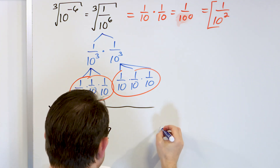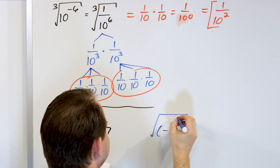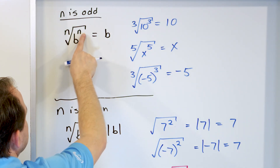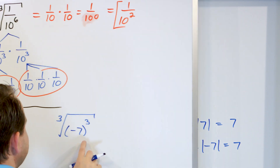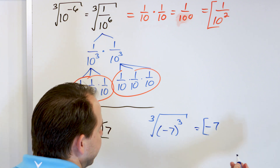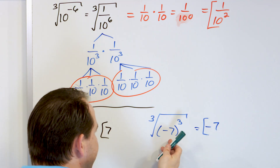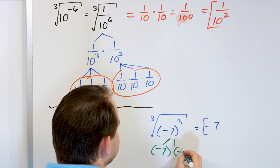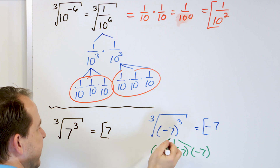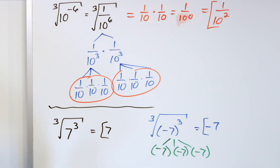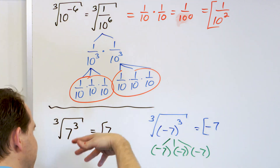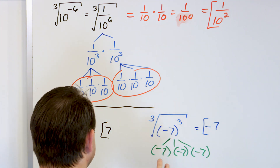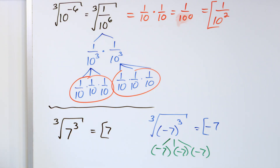Similarly, if we have the cube root of negative 7 cubed, it's the same situation — cube root canceling with a cube power — and whatever is inside comes out, so the answer is negative 7. You can also verify this with a factor tree: negative 7 times negative 7 times negative 7 is a triplet, and it comes out as negative 7. This is why negative numbers under a cube root or any odd-power root are totally fine, whereas negative numbers under a square root or any even-power root give you problems.